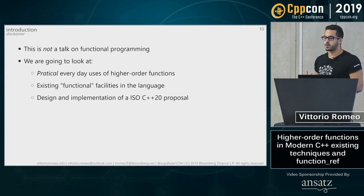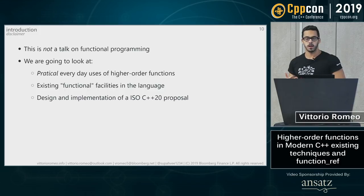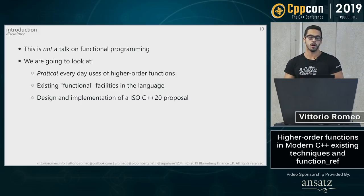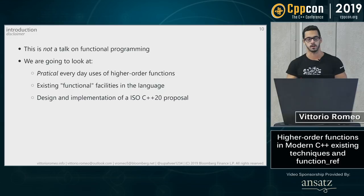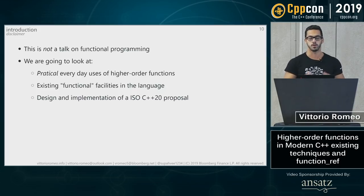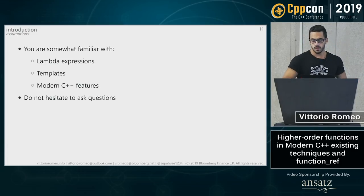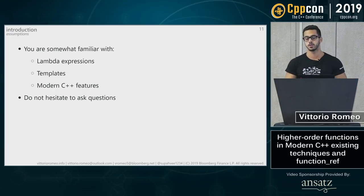As a disclaimer, I'm not here to evangelize about functional programming. I like it and think it's a good paradigm, but I want to give you an idea of how you can use higher-order functions in practical, everyday cases in your source code without having to convert your entire codebase to follow the functional paradigm. My assumptions are that you're somewhat familiar with lambda expressions, templates, and modern C++ features, but please don't hesitate to ask questions.